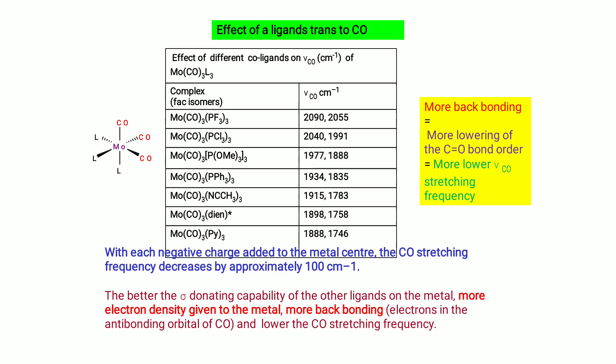Effect of ligands trans to the carbonyl: for a Mo(CO)₃L₃ complex, the carbonyl stretching frequency varies with different ligands L — all values decrease with increasing electron donation. More back-bonding means more lowering of C=O bond order and lower carbonyl stretching frequency. With negative charge added to the metal center, the carbonyl stretching frequency decreases by approximately 100 cm⁻¹. Better sigma-donating capability of other ligands gives more electron density to the metal, more back-bonding, and lowers the carbonyl stretching frequency.